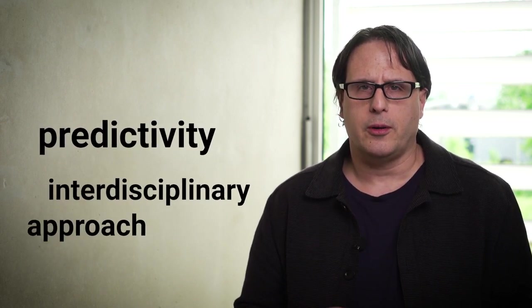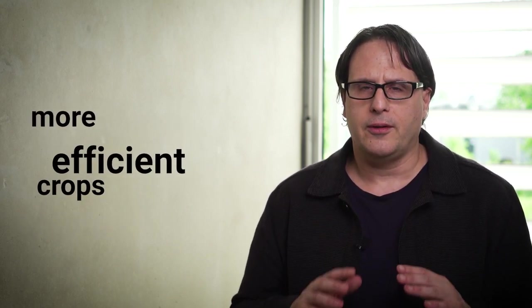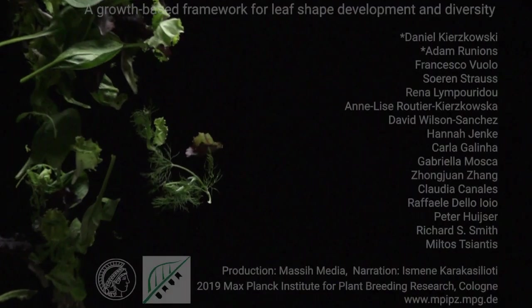We deconstructed complex leaf development into its cell level elements and used this information to transfer this trait into a different species. This helps demonstrate the predictivity of our interdisciplinary approach. This information may also help us build more efficient crops by tinkering with organ growth patterns.